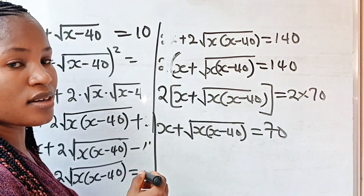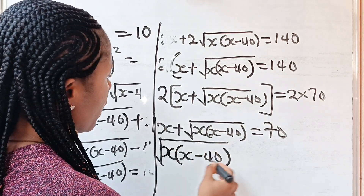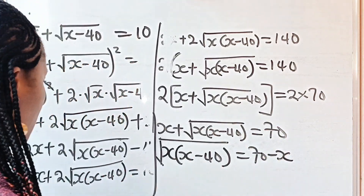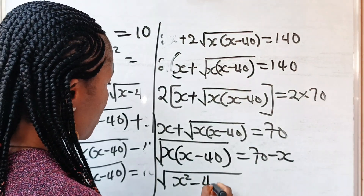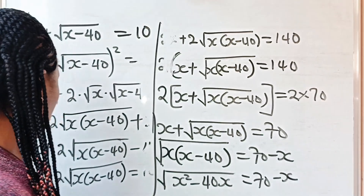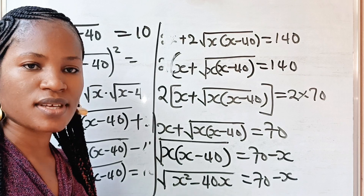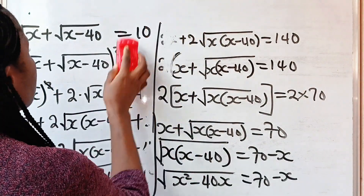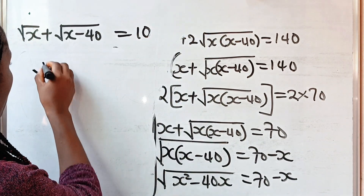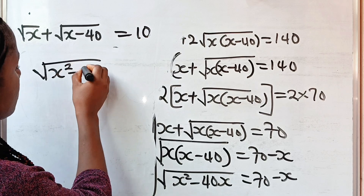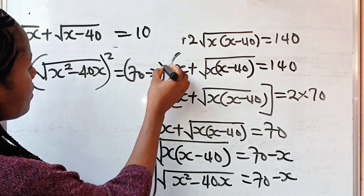Transfer x to the other side, so we are left with the square root of x times x minus 40 is equal to 70 minus x. Expanding inside the root: x times x is x squared, and x times minus 40 is minus 40x. So square root of x squared minus 40x is equal to 70 minus x. Now, we need to remove this root sign, and the only way to do that is to square both sides again.